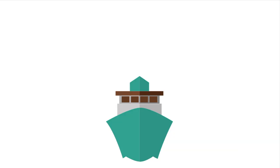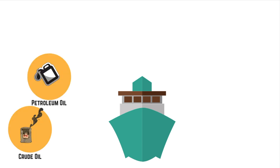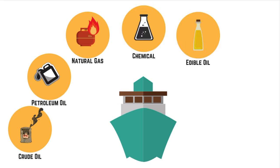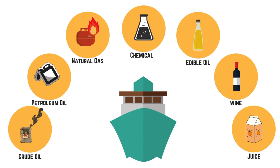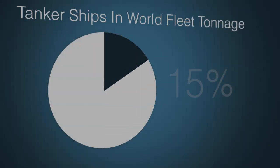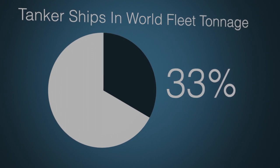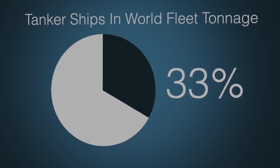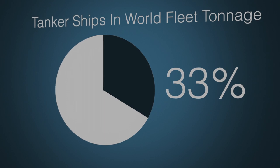Presently, a variety of products such as crude oil, finished petroleum products, liquefied natural gas, chemicals, edible oils, wine, juice, molasses, etc. are transported through tankers. Tankers play a major share of more than 33% of the world fleet tonnage.